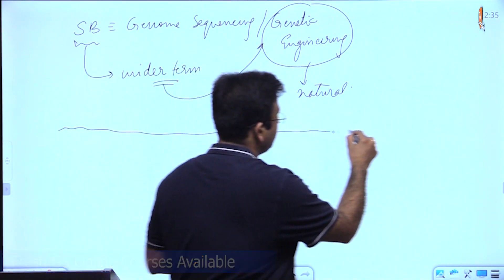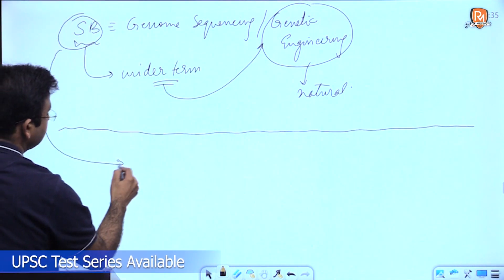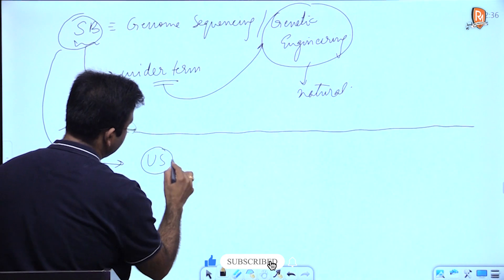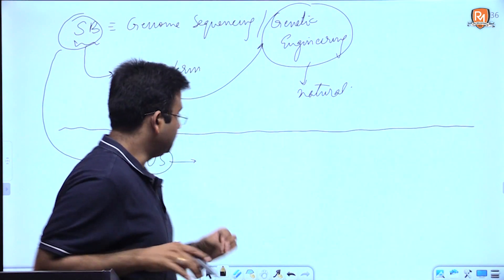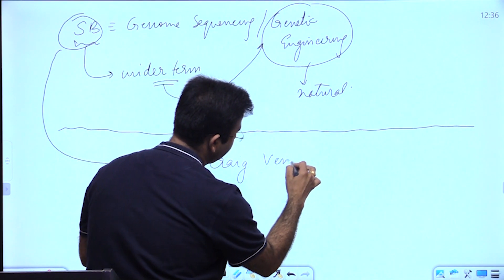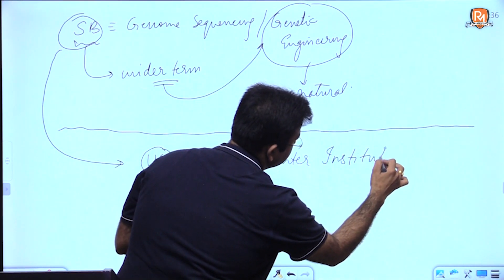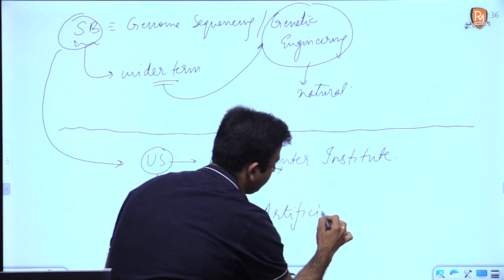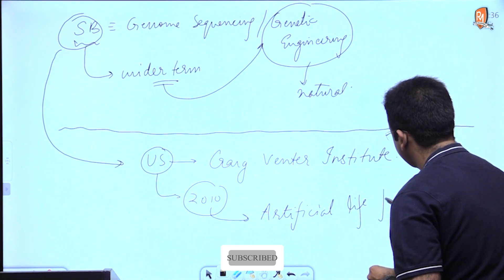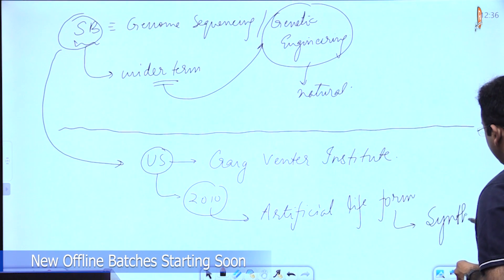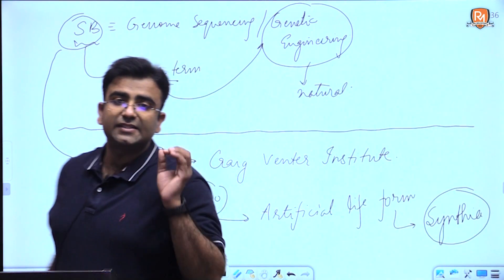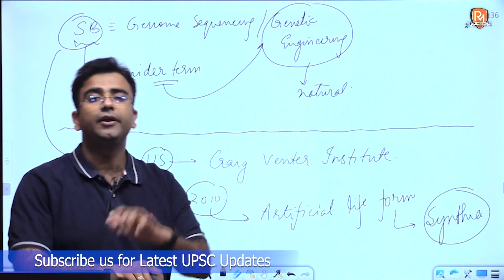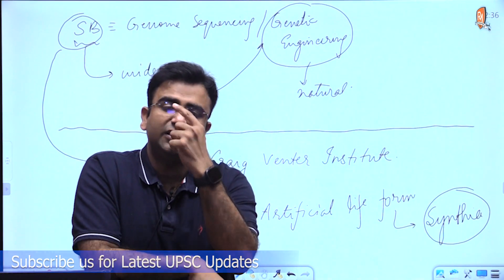Where does the concept of synthetic biology emerge from? It emerged from the works that took place in the United States at an institution known as the Craig Venter Institute. There, in the year 2010, for the first time an artificial life form was created, and the name of that life form is Cynthia. It was with Cynthia that for the first time an artificial life form was created, and from here the origin of synthetic biology can be traced.